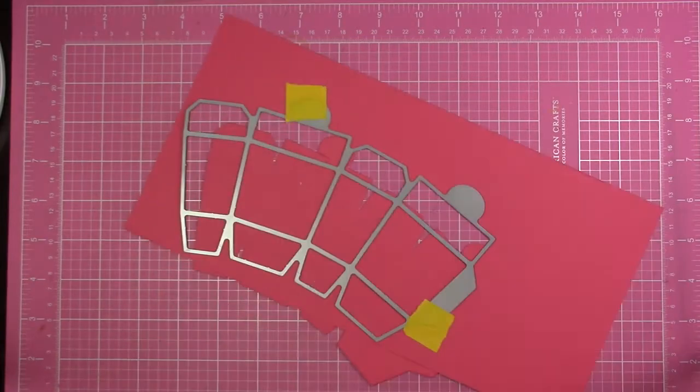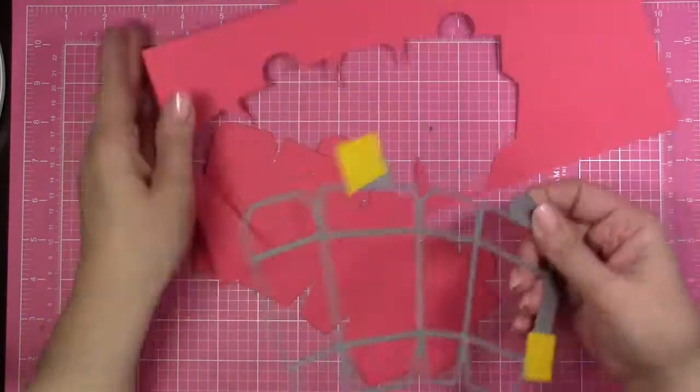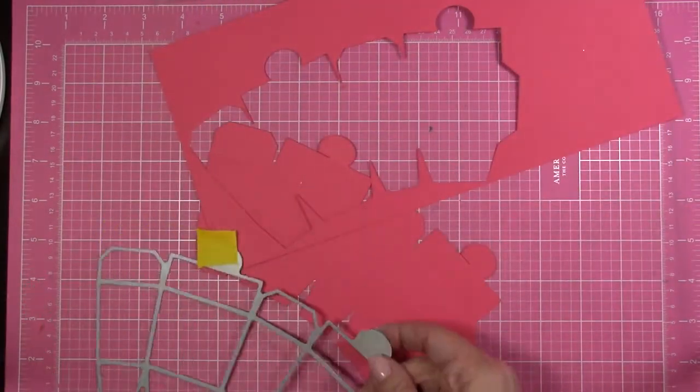I'm going to start out using a piece of 8.5x11 cardstock that I cut in half, and I'm going to be running this through my Big Shot.